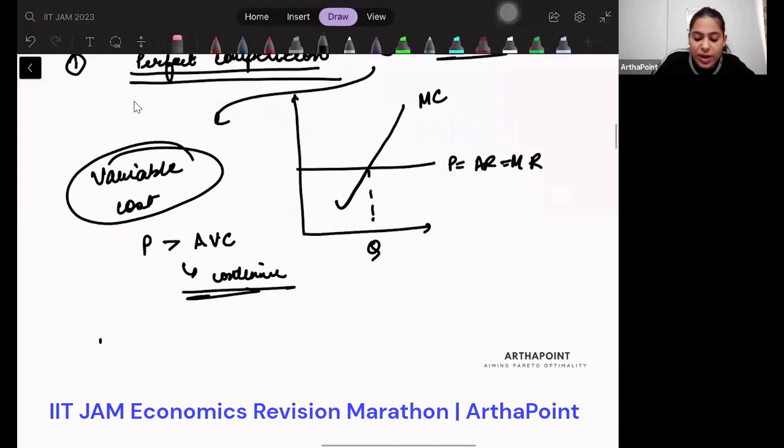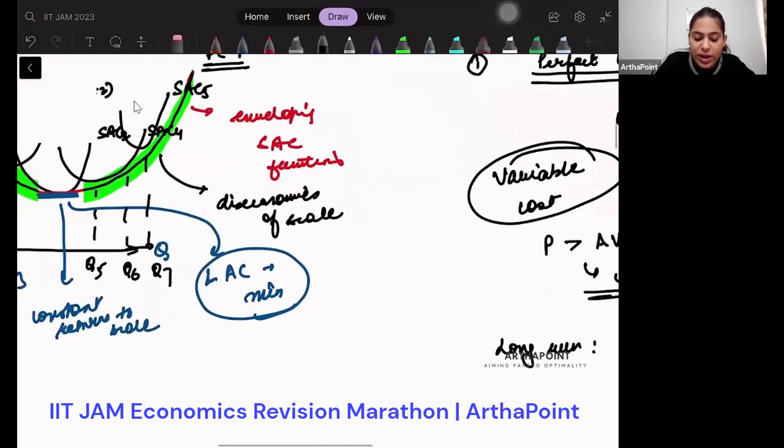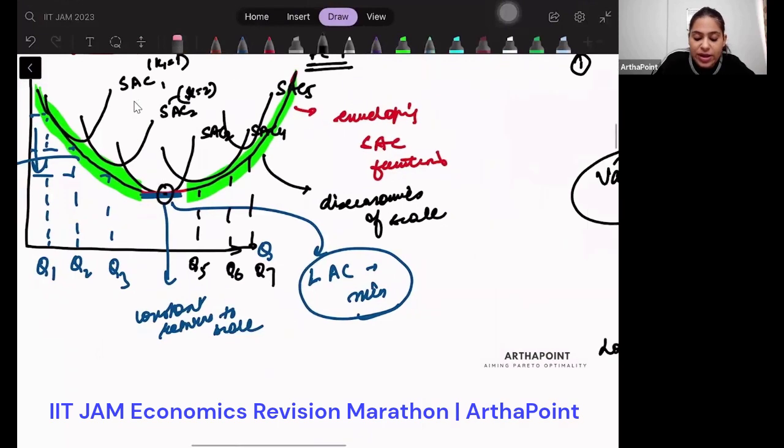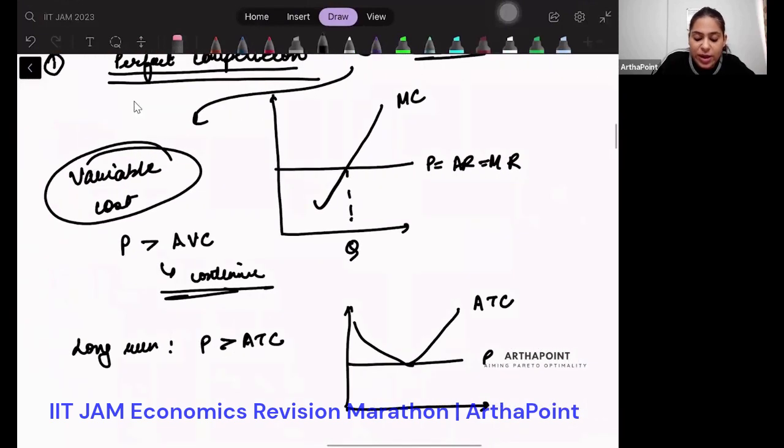In short run. But in long run, I want my price to cover the average total cost. So I want my price to be such that I cover the min of ATC. That is what I just mentioned here. I will be operating here for perfectly competitive firm.